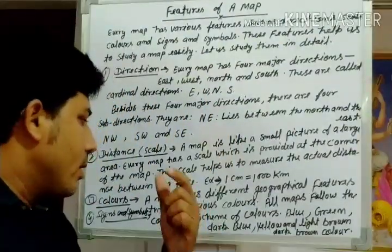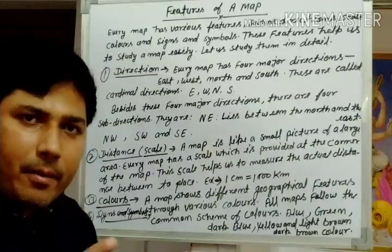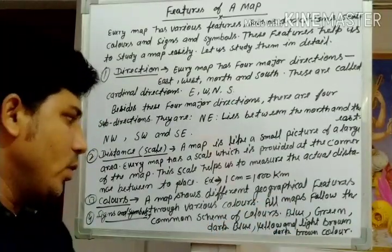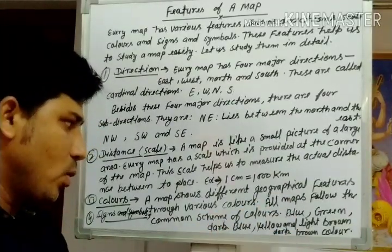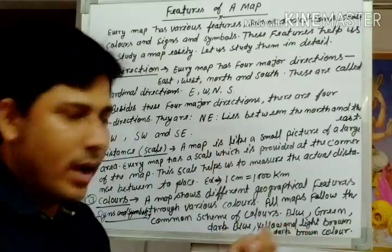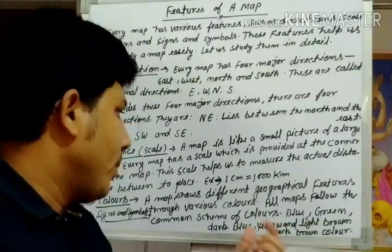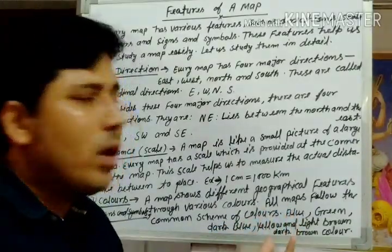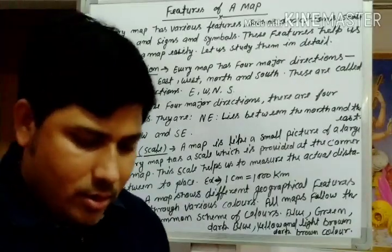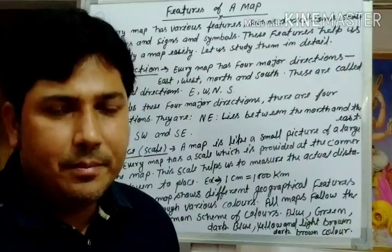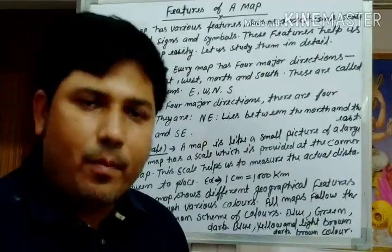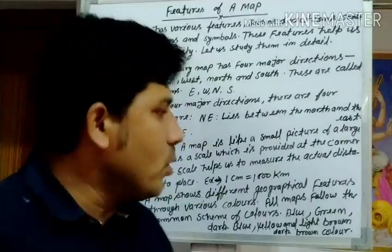There are also different colors used on maps. The colors used include blue, green, dark blue, yellow, light brown, and dark brown. Blue color represents seas, oceans, rivers, lakes, and ponds. Green color represents forest areas and plain areas.